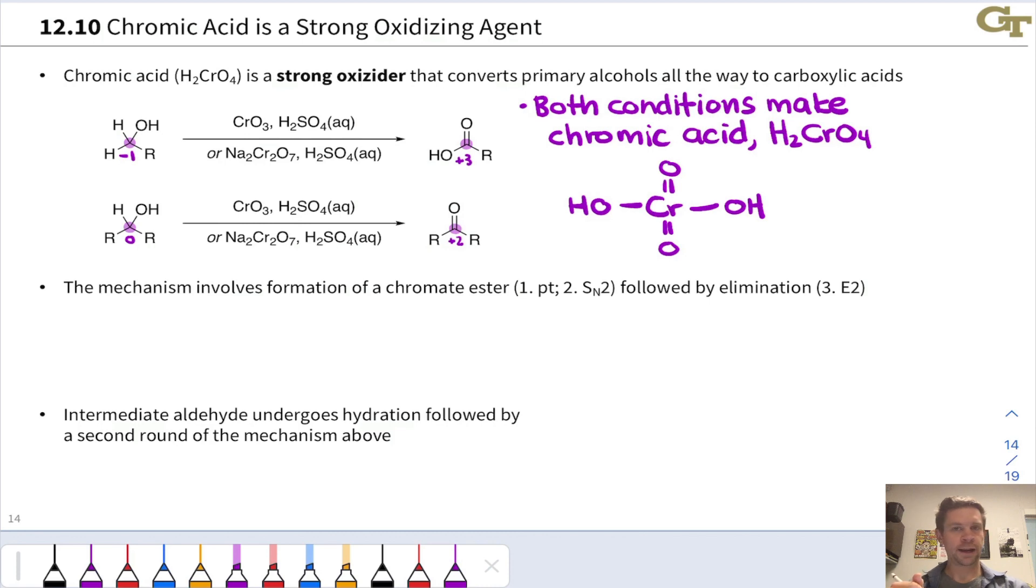You're seeing over the reagent arrow two different ways to generate chromic acid. The first uses chromium trioxide, CrO3, and a strong acid like H2SO4. We can also use sodium dichromate along with sulfuric acid. Either of these conditions will work just fine. Chromium trioxide plus sulfuric acid gives chromic acid.